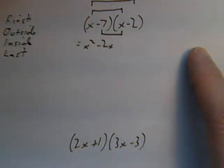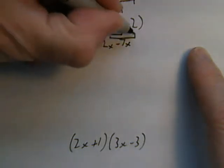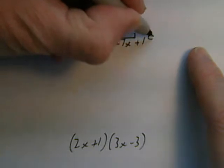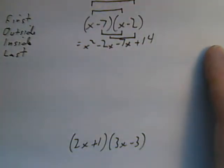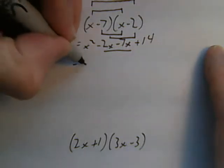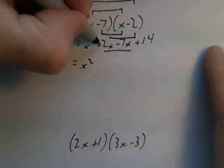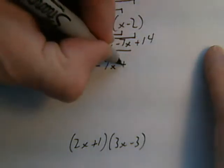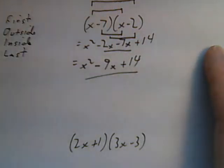The last, negative 7 times negative 2 is plus 14. Collect my like terms. Minus 2x minus 7x is minus 9x. There is your expanded binomial.